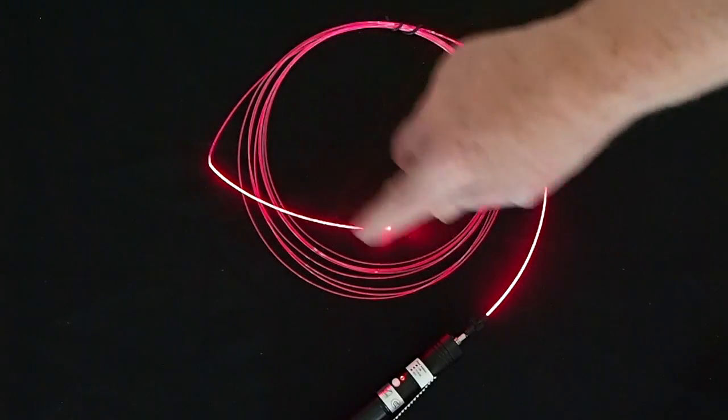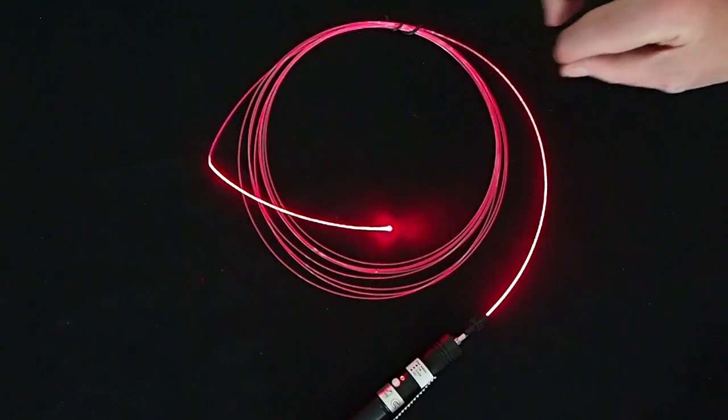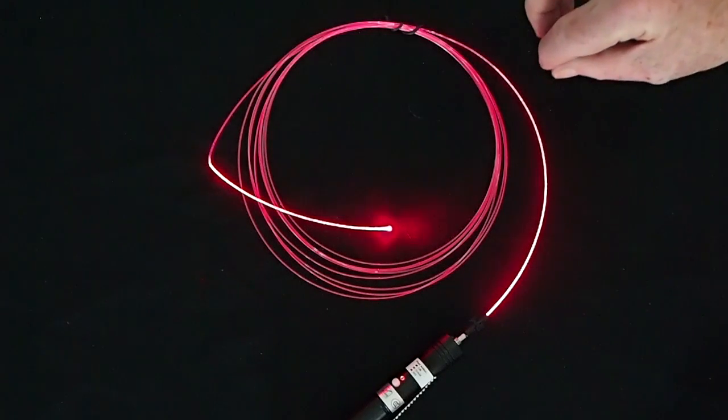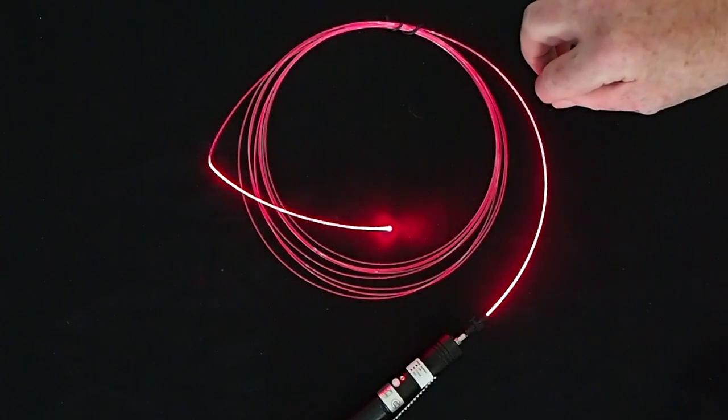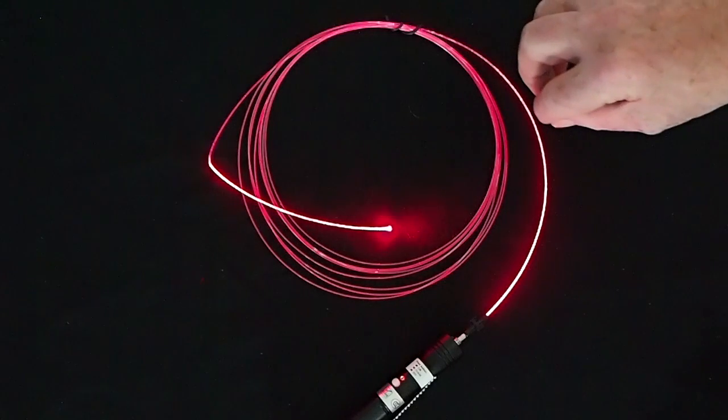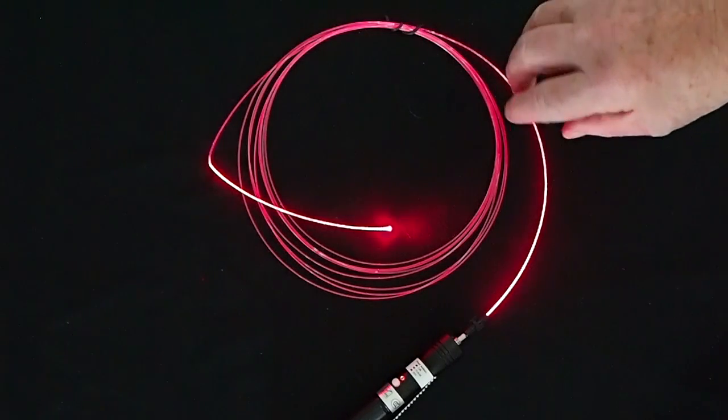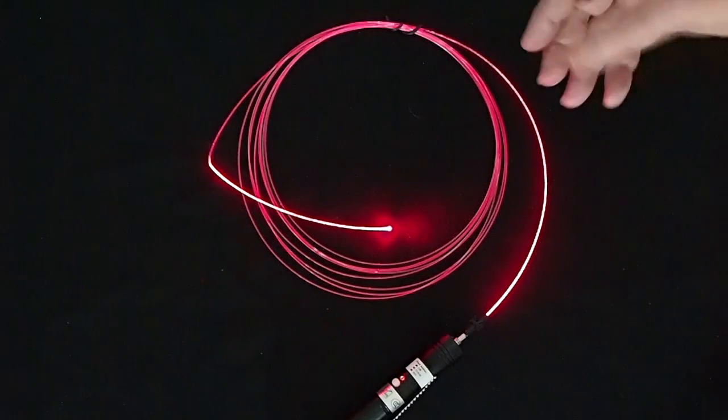The reason you can see it and you can see the red light is because there's scattering going on in the fiber. The light is being scattered and the scattered light is what comes out that we can see.